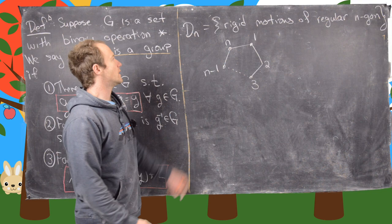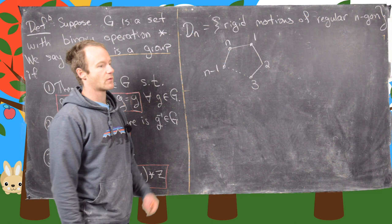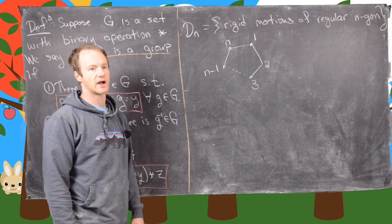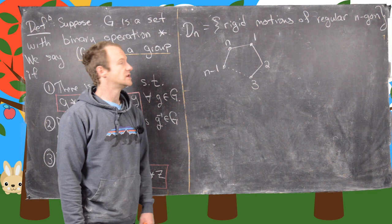In the last video, we presented the notion of the dihedral group, which is rigid motions of a regular n-gon. We looked at the example when n equals 3 and noticed there were 6 rigid motions of the regular 3-gon — in other words, the equilateral triangle — and we came up with a multiplication table, also known as a Cayley table, for those operations combined with each other.